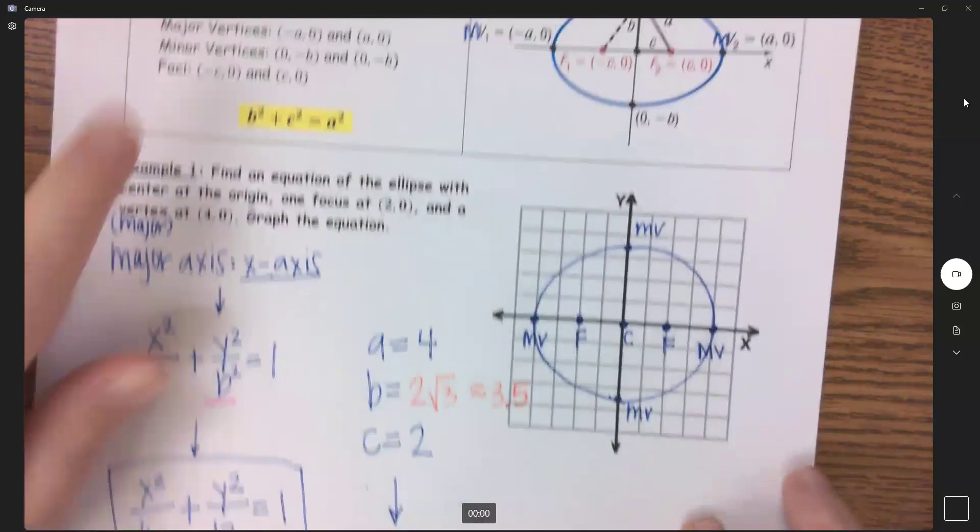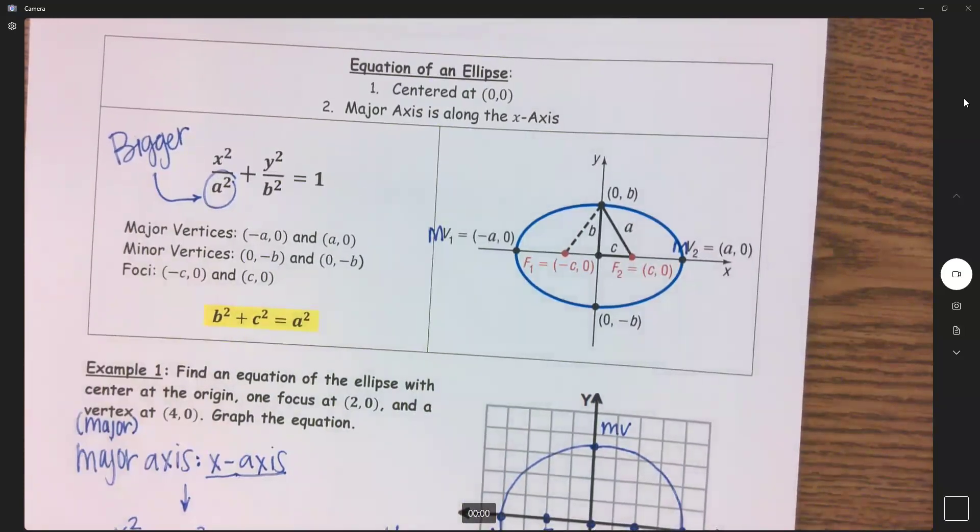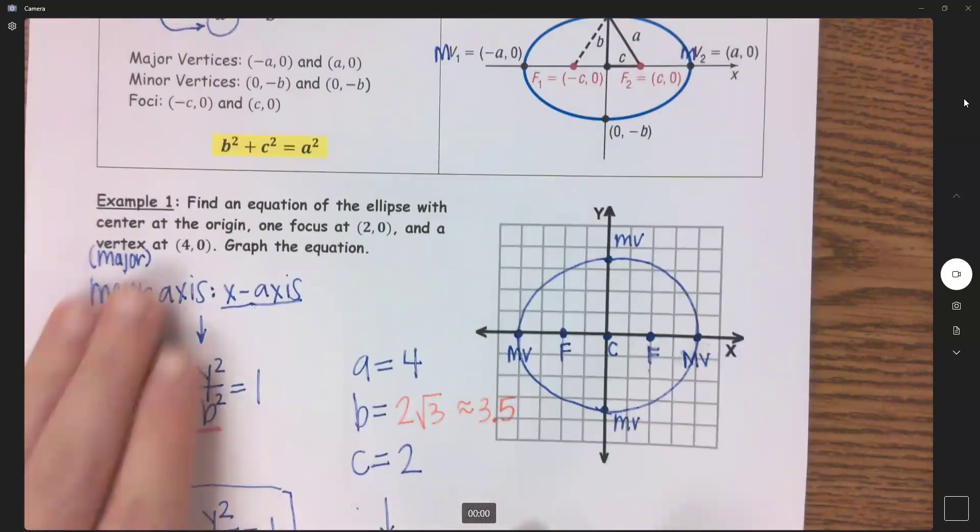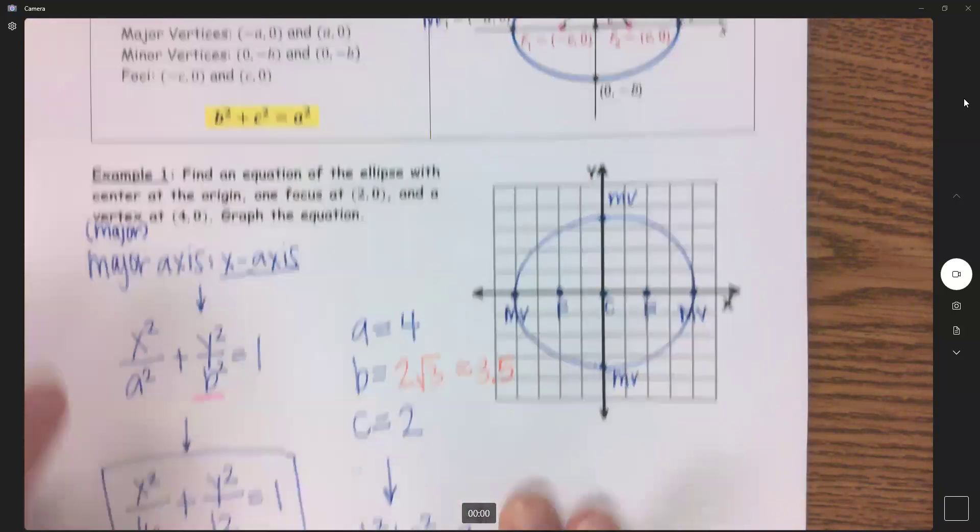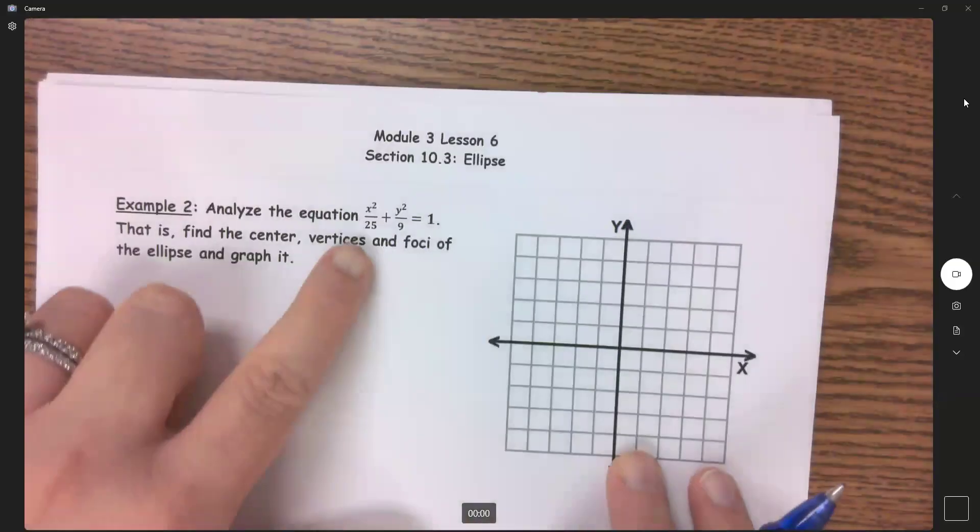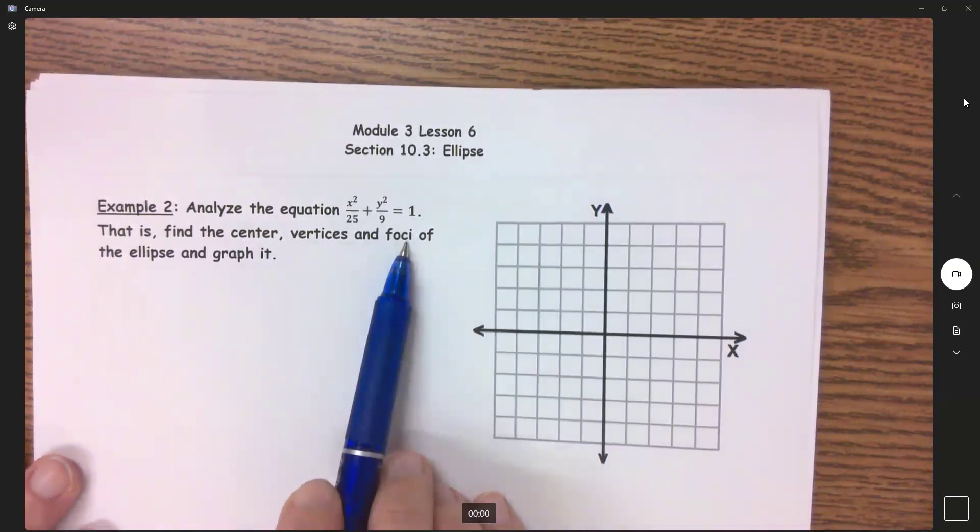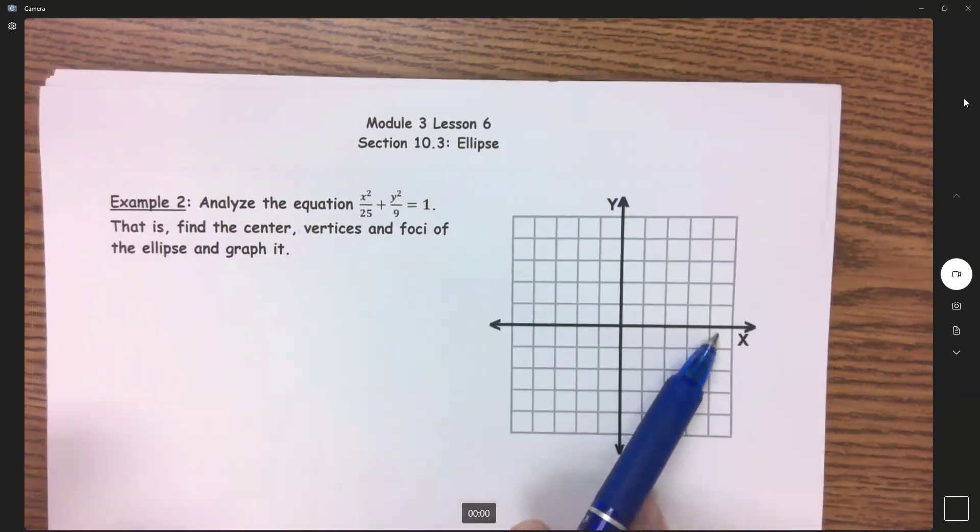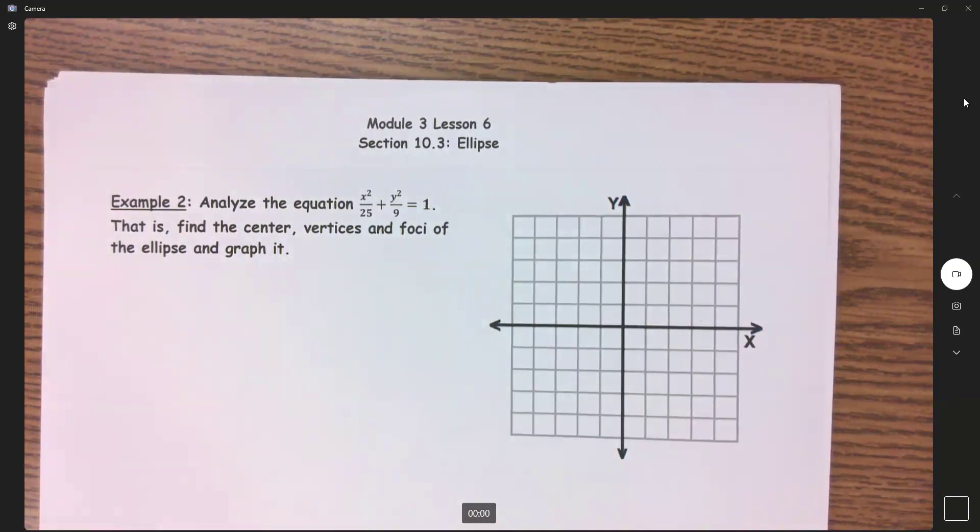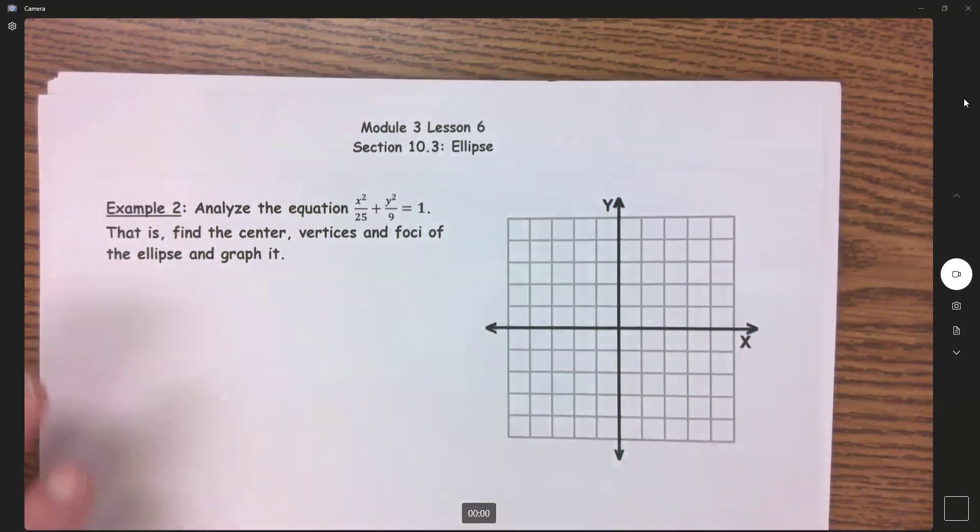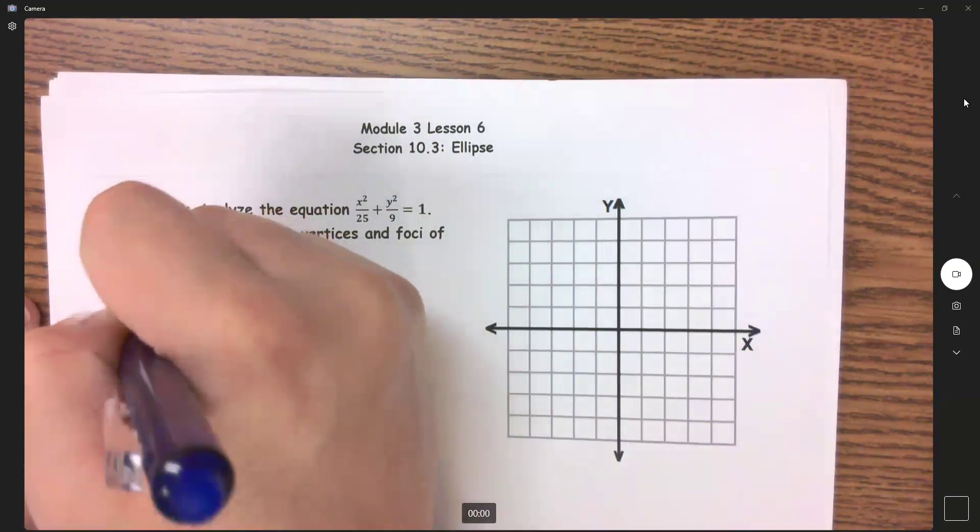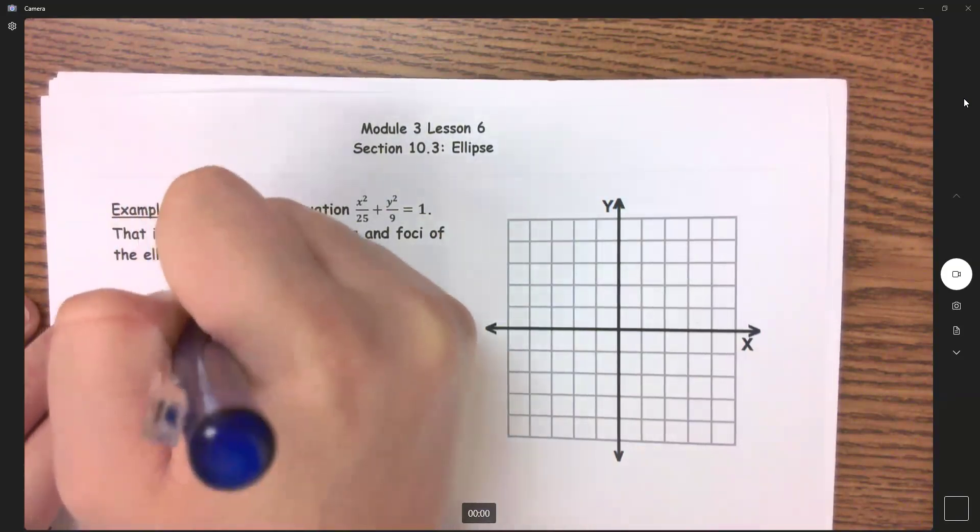Let's do one more example using this formula here, and we're going to kind of go opposite. This one gave me some information, and I had to write the equation. Now, in example 2, I am given the equation. I need to find some key things from this, and then graph it. So, first thing that I'm going to do is first, always, identify my major axis.